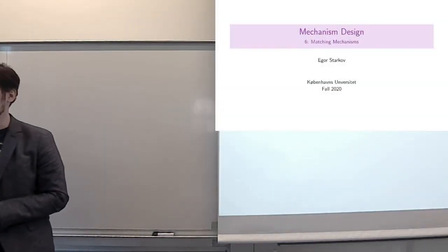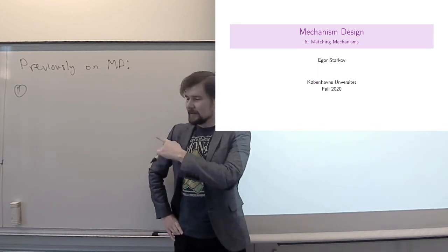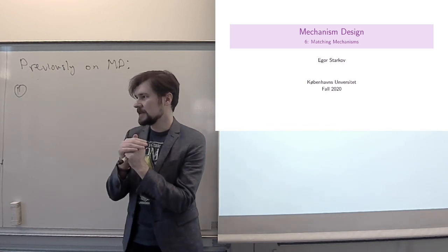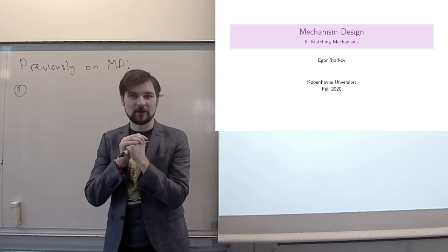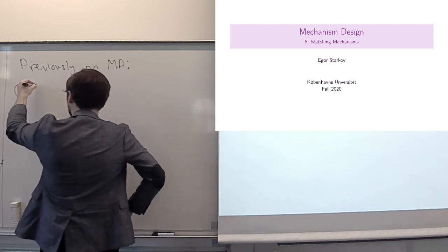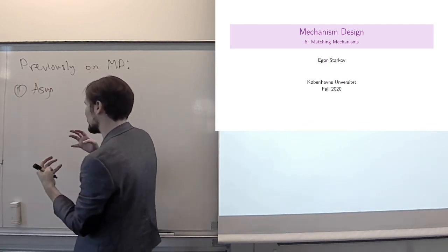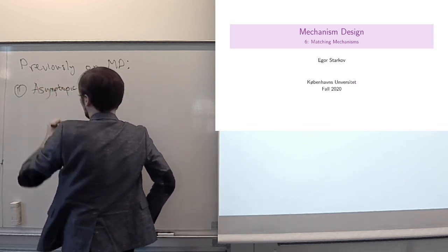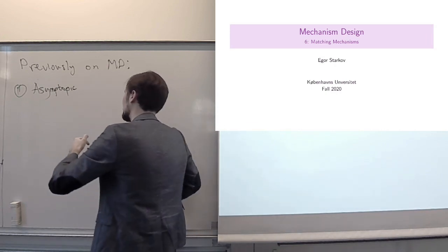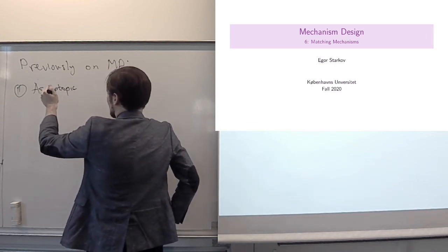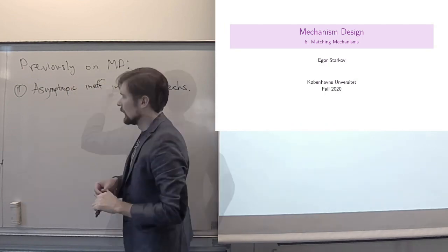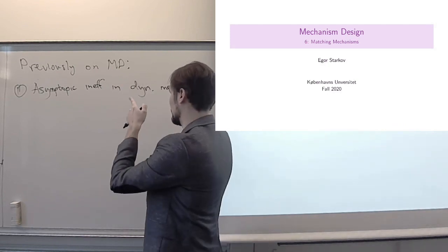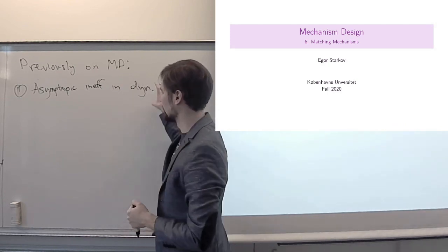Let's do a quick recap of what happened last week. The first thing we did was talk about dynamic mechanisms and asymptotic inefficiencies that arise in dynamic mechanisms. This was a juxtaposition with the result from the week before, where we got that all mechanisms achieve asymptotic efficiency if you can provide contemporaneous incentives. There are two main takeaways I would like you to bring home from this discussion.